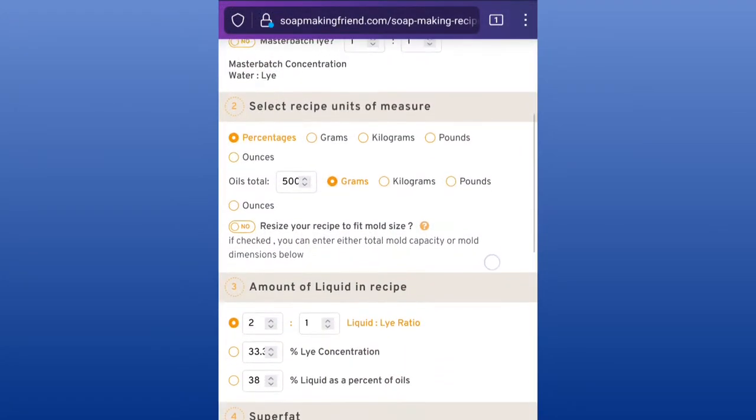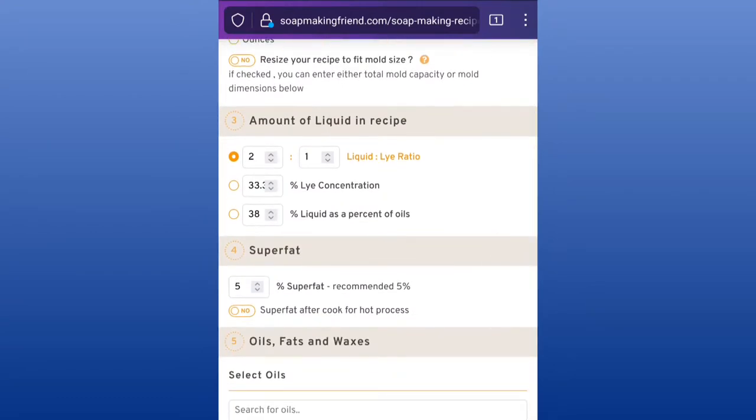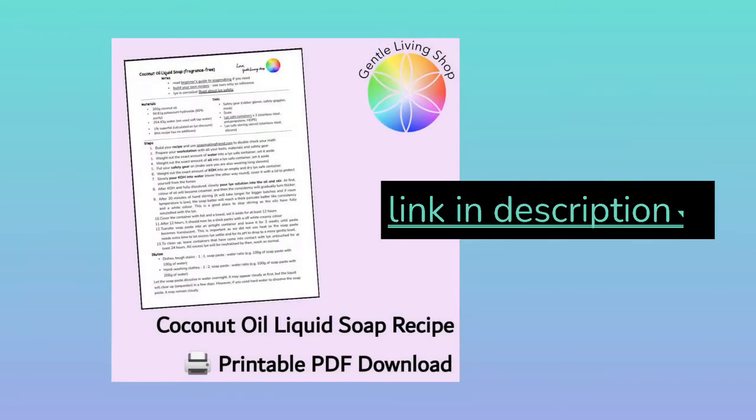To double check our calculations, we like to use the website soapmakingfriend.com. Now it's time to move on to tools and materials and the steps we take when making soap. You can find a downloadable PDF version of this entire recipe. Check out the link in the description.